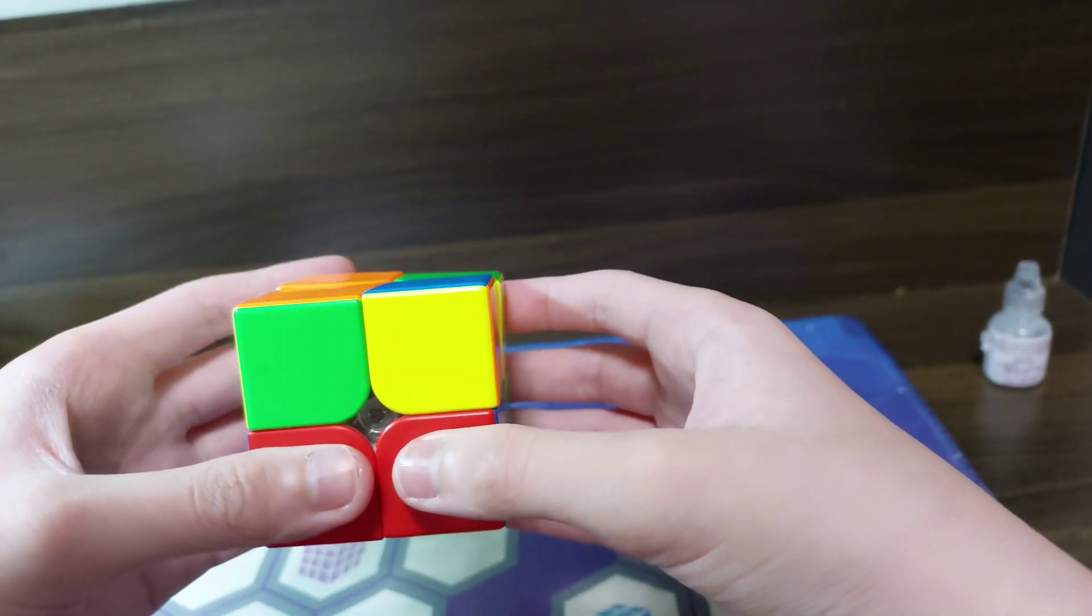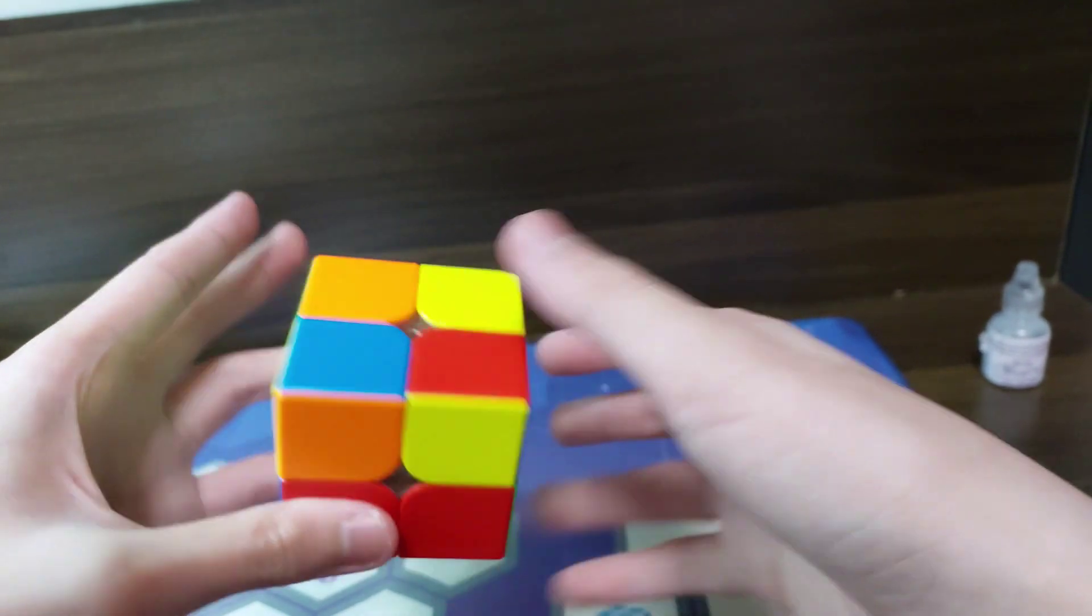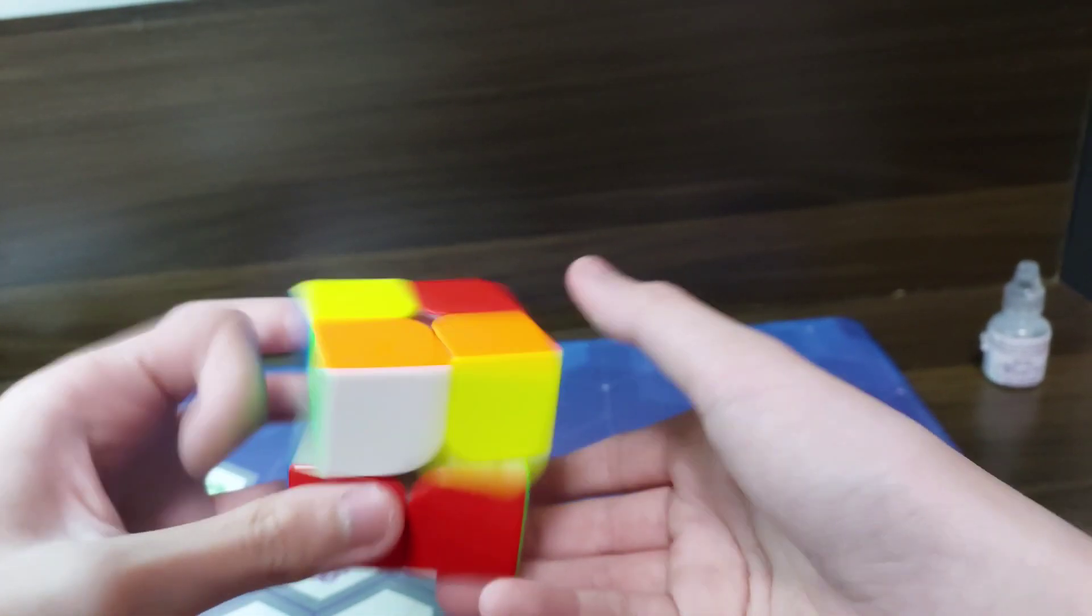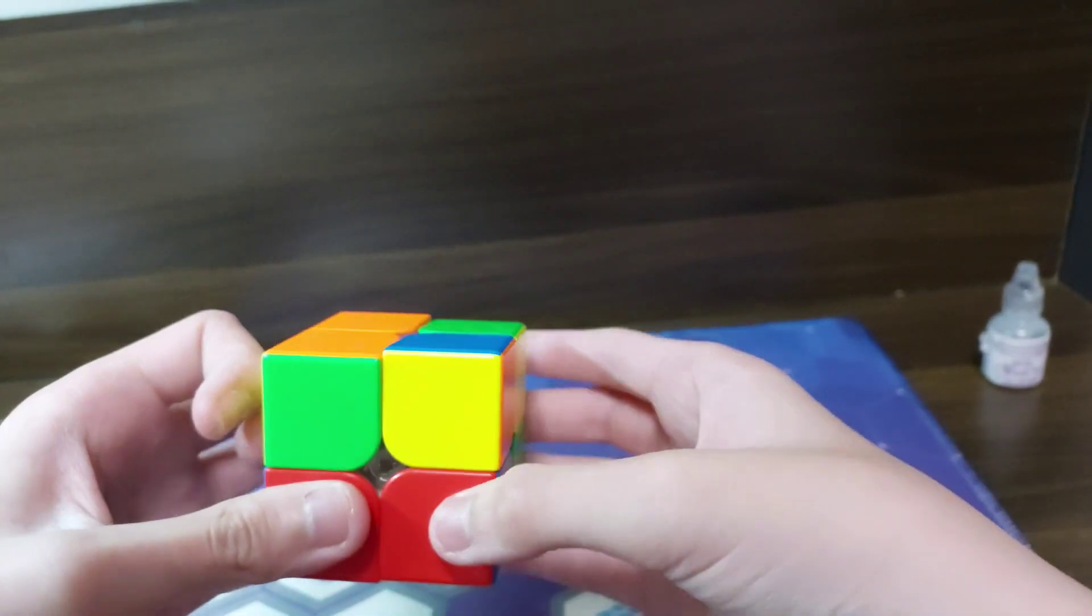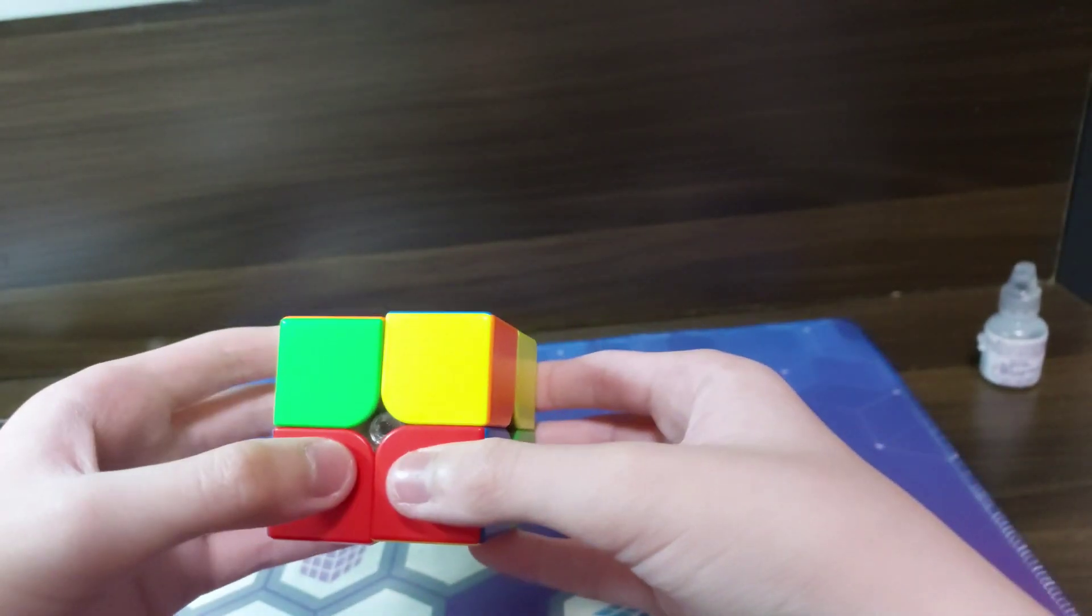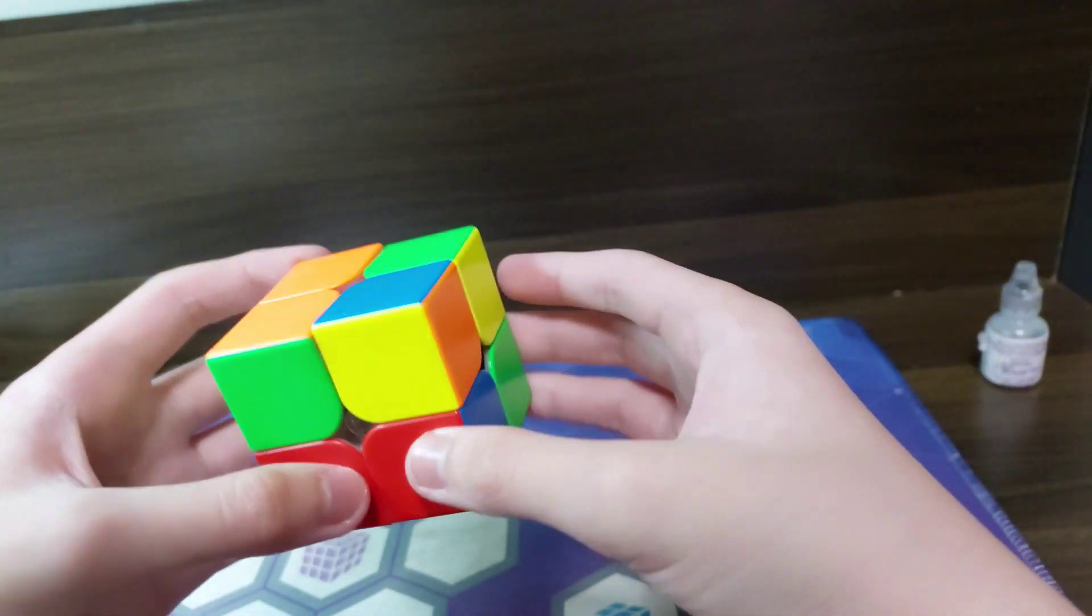However I also see another solution now which goes like, instead of doing U R into sune, you could just do R U 2 and then just finish off like this. That probably would have been a bit better, but they're pretty much about the same speed.